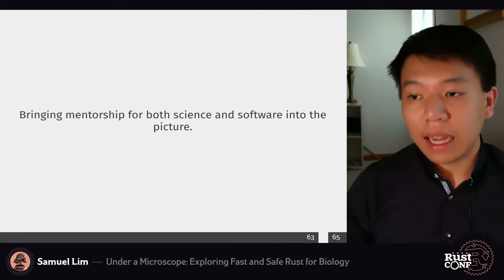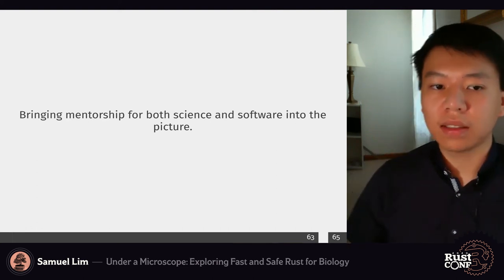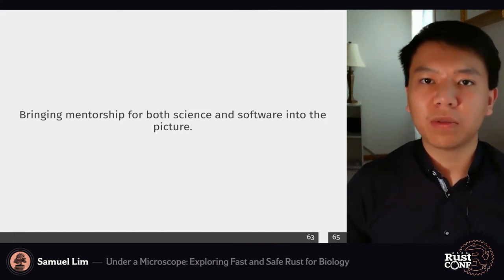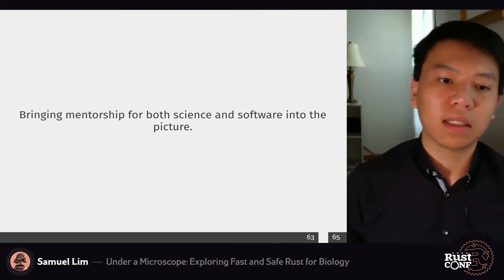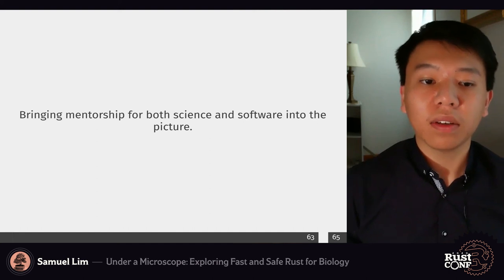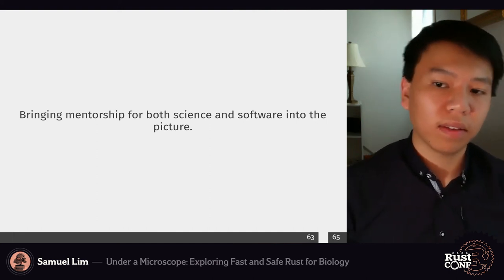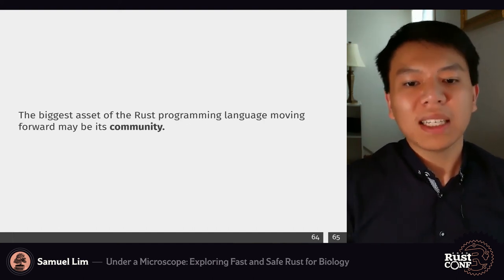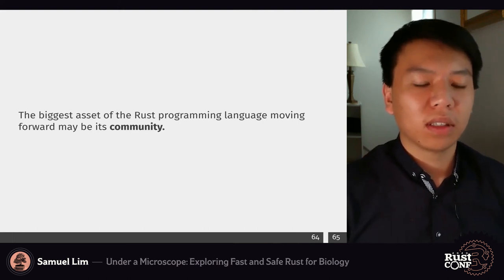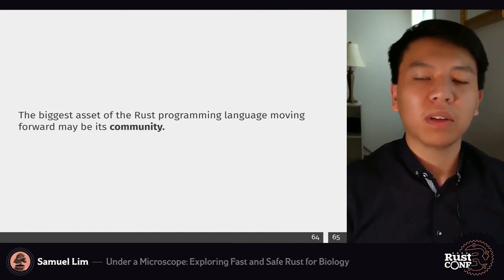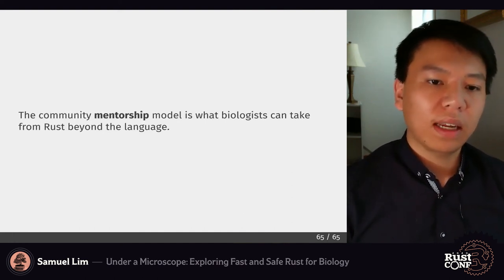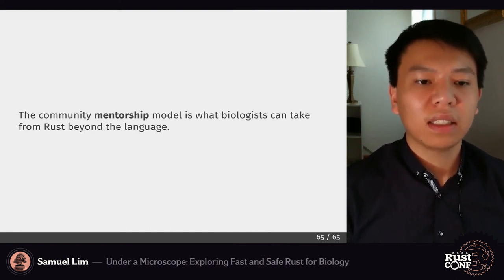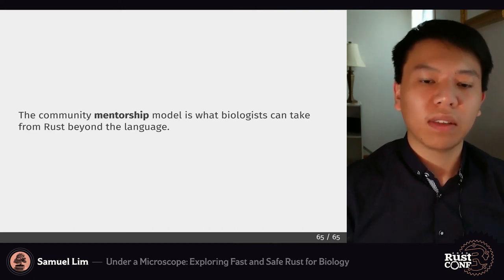We can act with different software in Rust — not only in so far as the software itself, but also at the level of exchange from one software engineer to another, from one scientist to another — and build a community of mentorship for both science and software, building a larger picture. The biggest asset of the Rust programming language going forward may not just be the language itself, but also its community. The community mentorship model is what biologists can continue to take and learn from Rust, beyond the language, even as they go further.